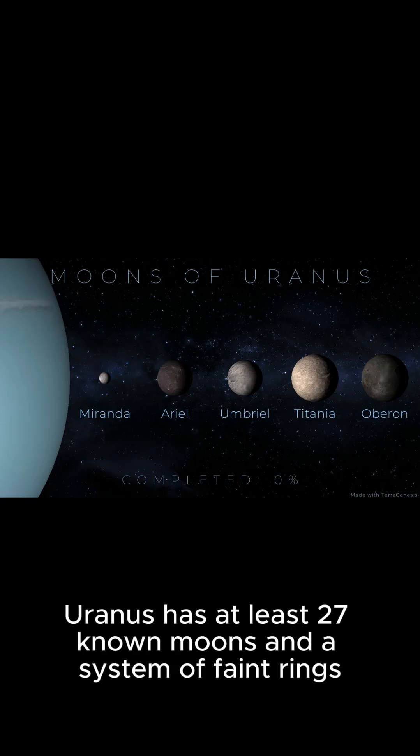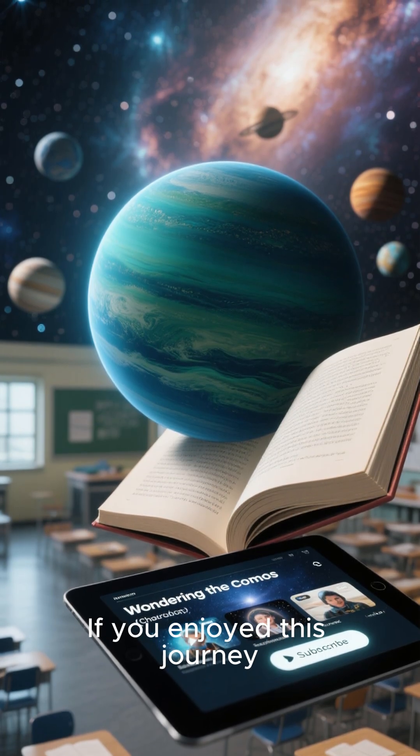Uranus has at least 27 known moons and a system of faint rings.